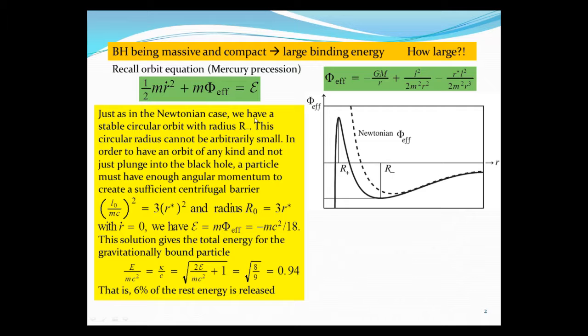So anyway, we can have a stable circular orbit around this point here, r minus. This circular radius cannot be arbitrarily small. In order to have an orbit of any kind, not just plunge directly into the black hole, a particle must have enough angular momentum to create sufficient centrifugal barrier.